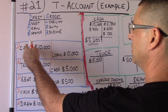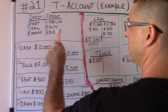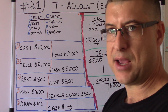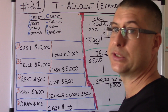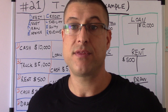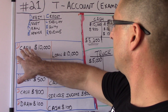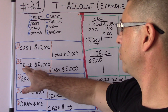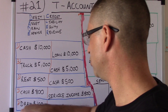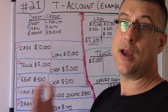These are journal entries we've already done. We've already determined what's a debit and what's a credit, and debits and credits always equal. Now we have five journal entries. In a classroom exercise you might have 20, 25, or 30 — that's why t-accounts are important. Every account we have — cash, loan, truck, rent, service income, and draw — each one gets its own t-account.